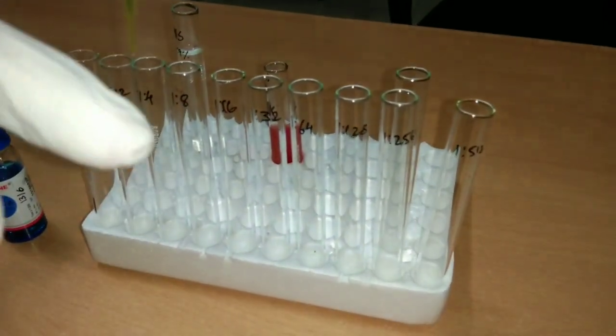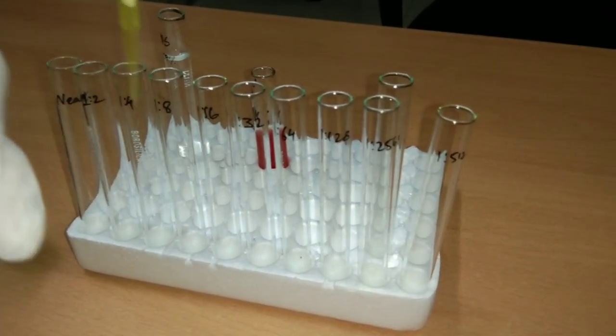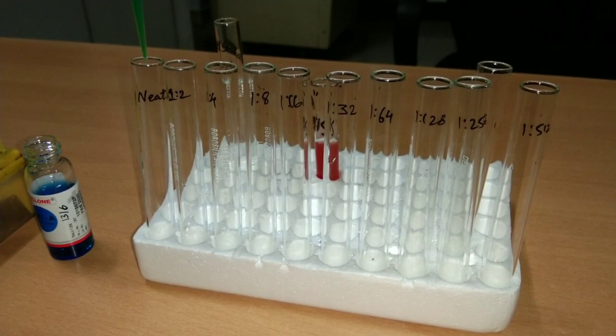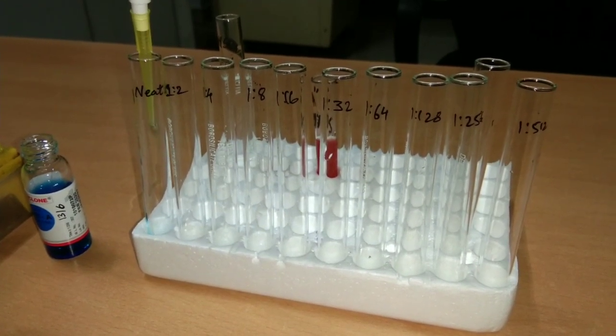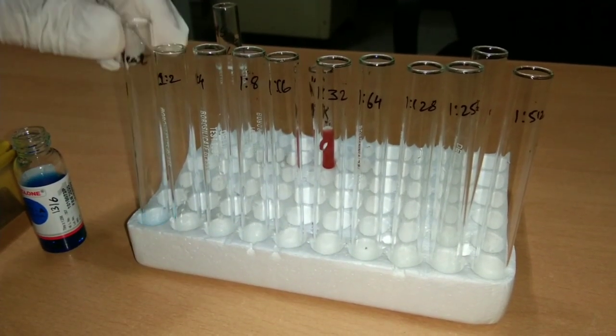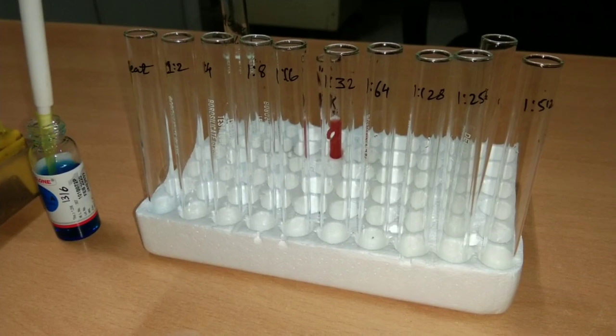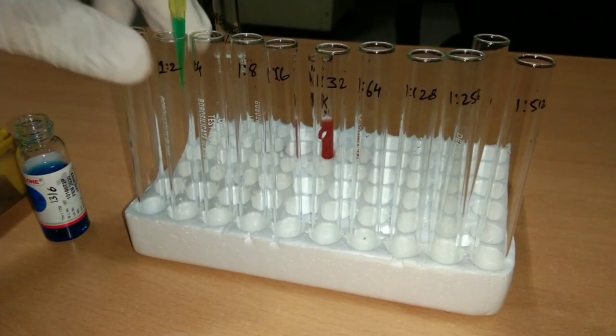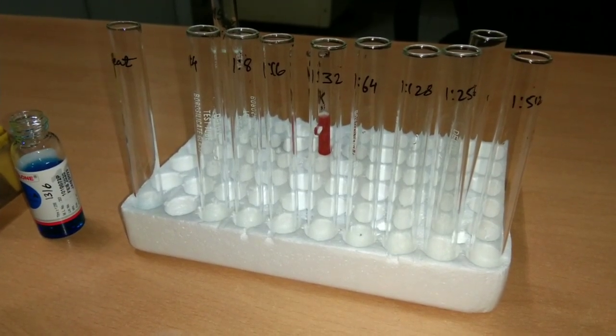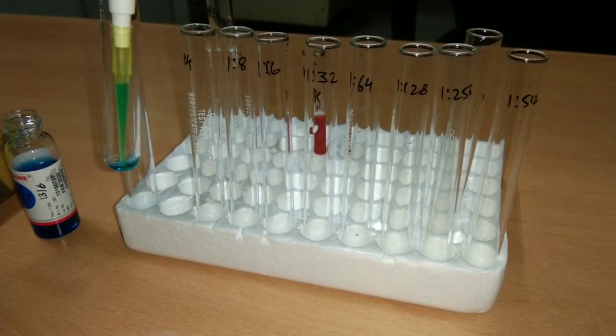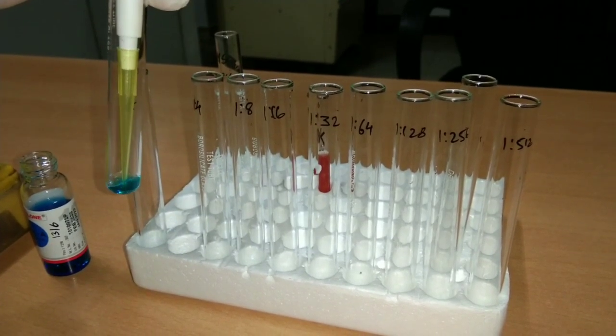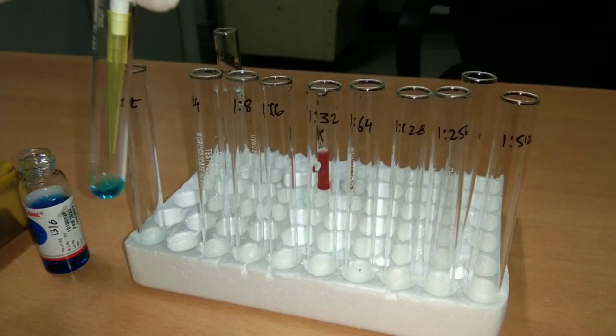The first tube is neat, that is without any dilution. Then add 0.1 ml (100 microliters) of anti-A anti-serum into the first tube and 100 microliters of anti-A anti-serum into the second tube. The second tube contains one part of normal saline and one part of anti-A anti-serum. It becomes 1:2 dilution.